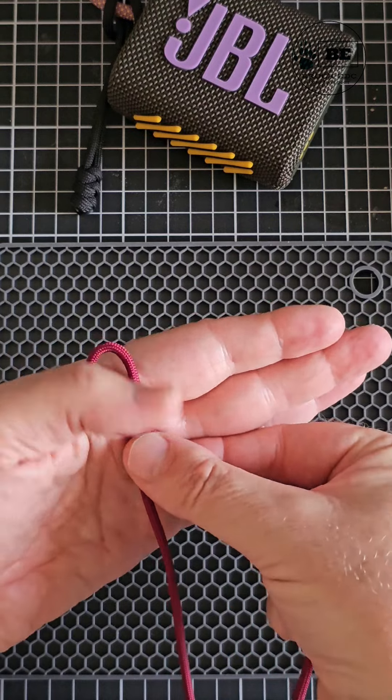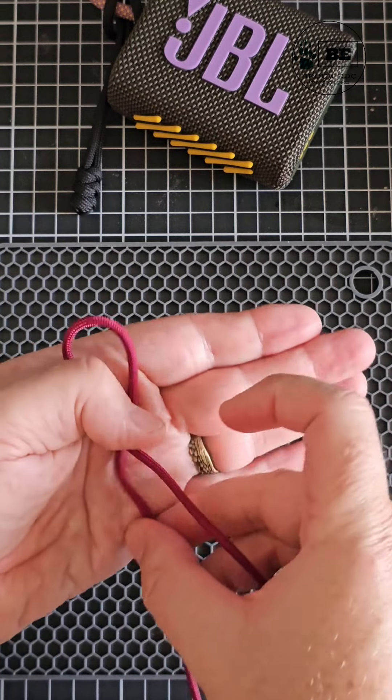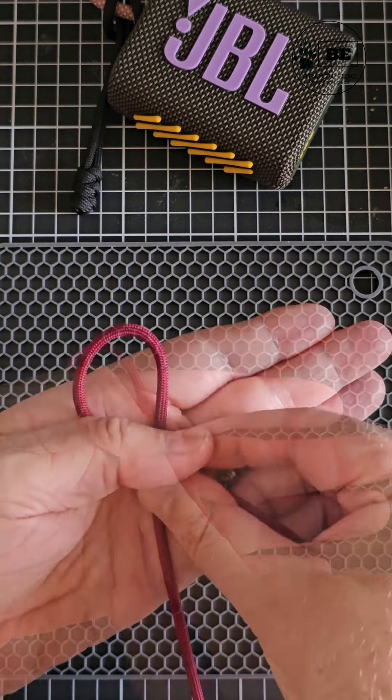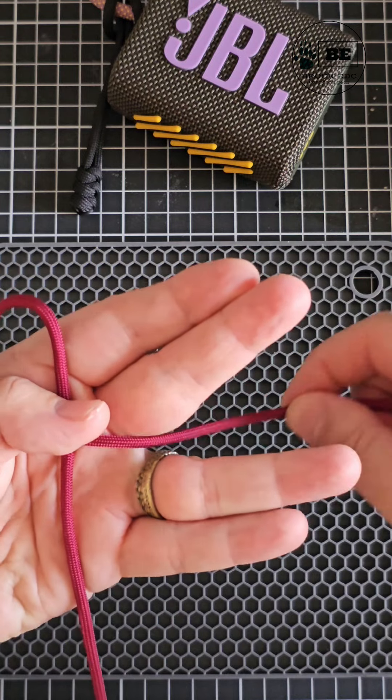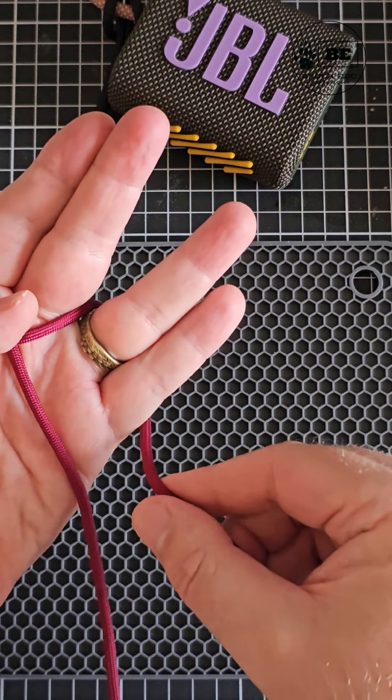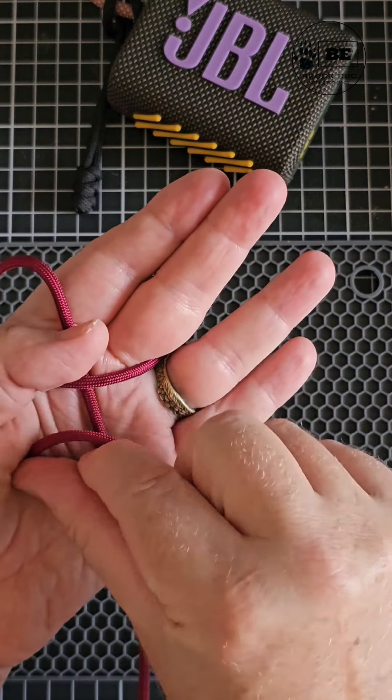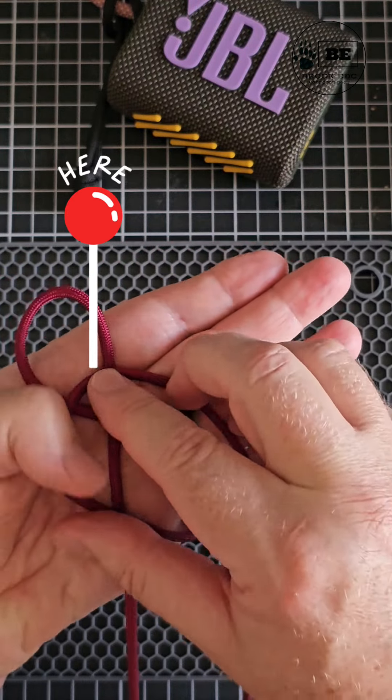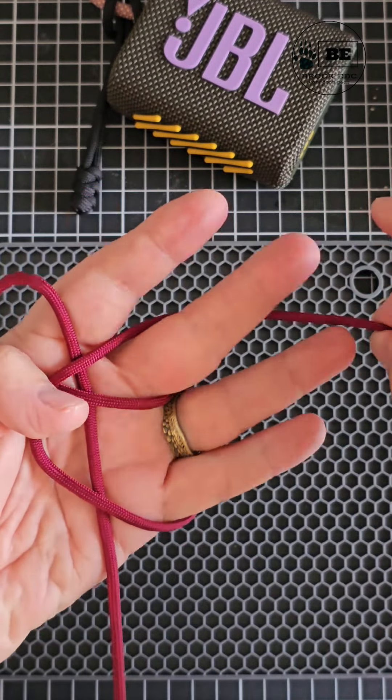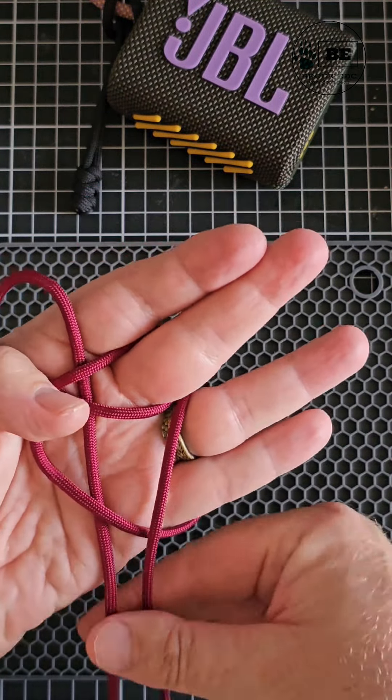Create a loop and then with the working end you're going to bring that working end between the second and third finger and around the back of the fourth and come back on itself. You're going to loop around, create a small triangular feature, and come around your second finger to the back, bringing it down to the bottom of the hand.